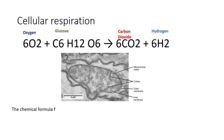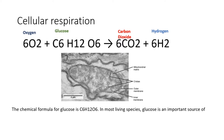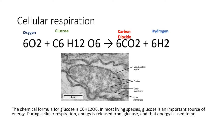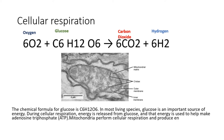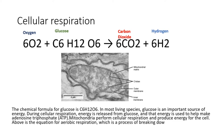The chemical formula for glucose is C6H12O6. In most living species, glucose is an important source of energy. During cellular respiration, energy is released from glucose, and that energy is used to help make adenosine triphosphate, ATP. Mitochondria perform cellular respiration and produce energy for the cell.